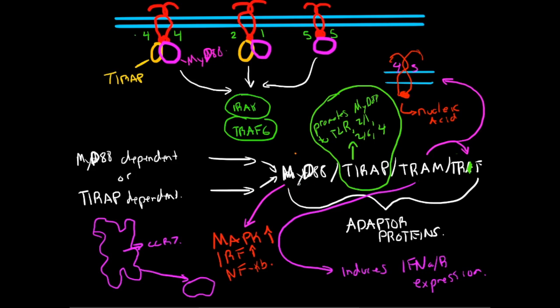What MYD88 does once TRAP activates it to these toll-like receptors is it increases MAPK, IRF, and NFKB expression. Now what about TRAM? TRAM induces interferon alpha and beta expression from activating these two pathways here. So once again, it is important.